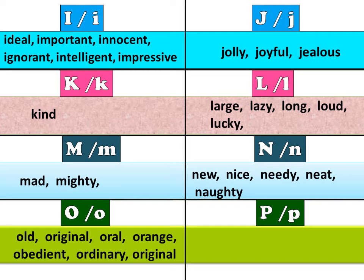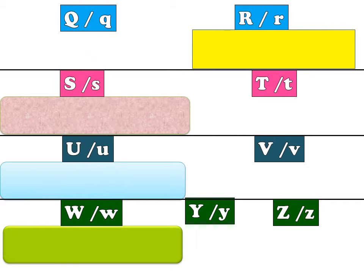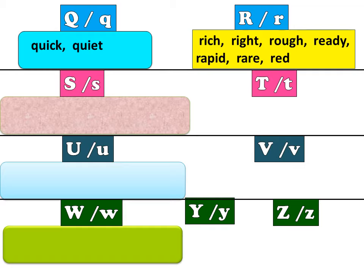P: poor, powerful, perfect, popular, pink, peaceful. Q: quick, quiet. R: rich, right, rough, ready, rapid, rear, red.